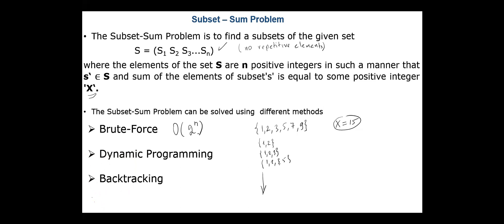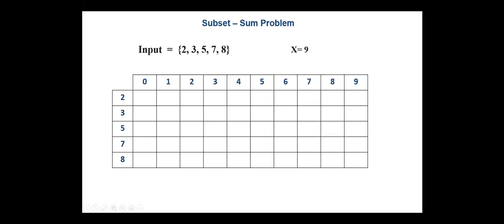Today we are going to discuss the dynamic programming method to find if there is a subset that sums to x, and to find the number of subsets that sum to x. Consider, for example, that we have the input set {2, 3, 5, 7, 8} and x equals 9. Using dynamic programming, we always have to construct a table. In the rows of the table we insert the elements 2, 3, 5, 7, 8, and we need x plus 1 columns starting from 0 to the required sum 9.